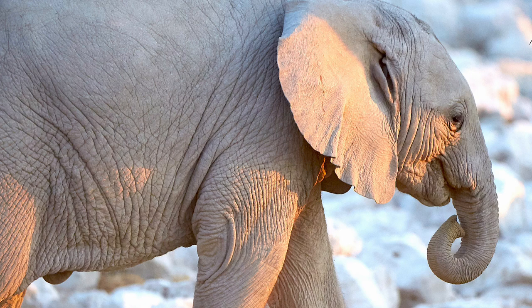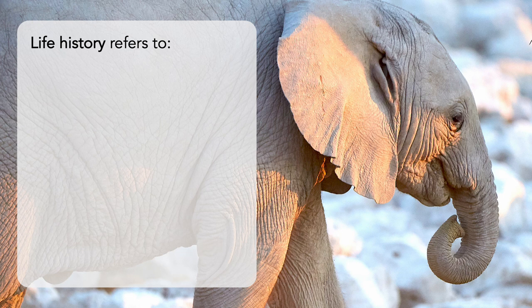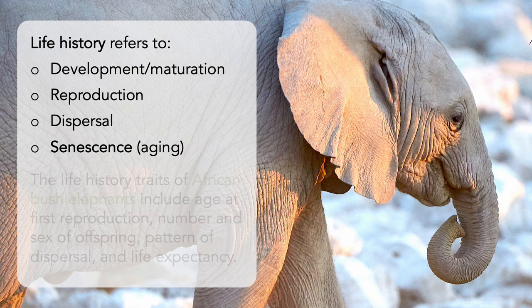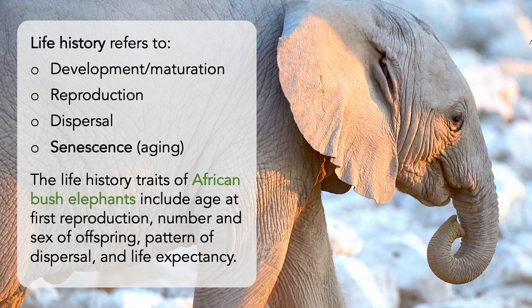Evolutionary ecology starts with the life history of species. Life history refers to the timing of events that are directly related to survival and reproduction. This includes development and maturation, reproduction itself, dispersal, and senescence or biological aging. The specific life history traits of African bush elephants include the age at first reproduction, the number and sex of offspring, any patterns of dispersal, and overall life expectancy.